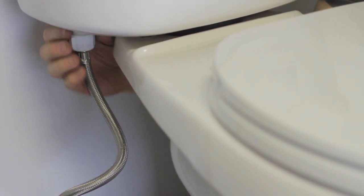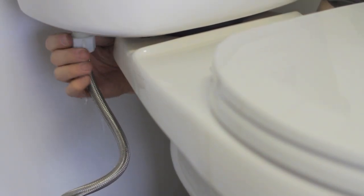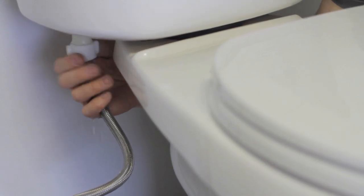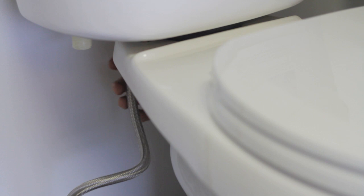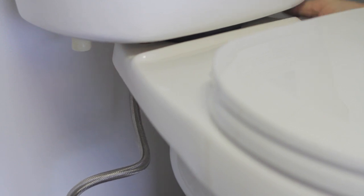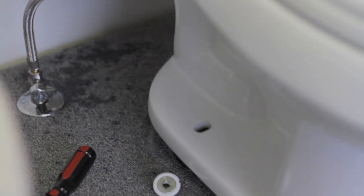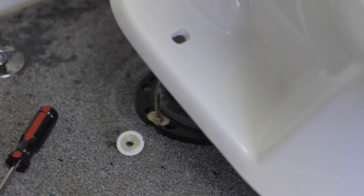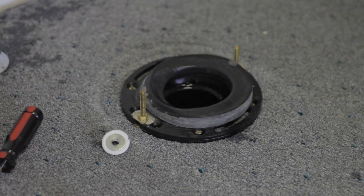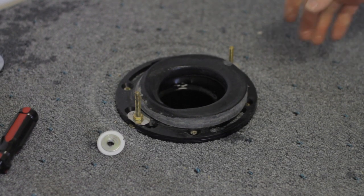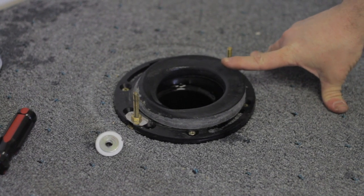Once you've got the water supply disconnected, you want to use a sponge or some kind of device to remove the water from the tank and the bowl. You're now ready to pull your toilet and typically you're going to have a wax seal.